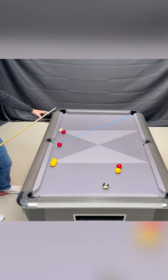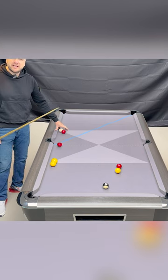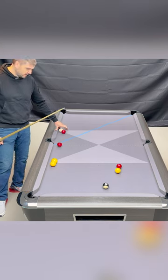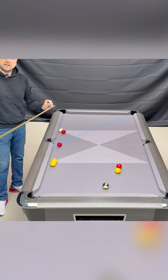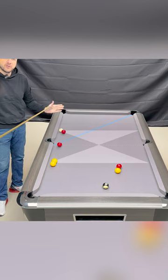Now what might just help you here, because all tables play a little bit differently, the rails, is just play with a hair of spin. Not too much, just a fraction, just to help the cue ball around.